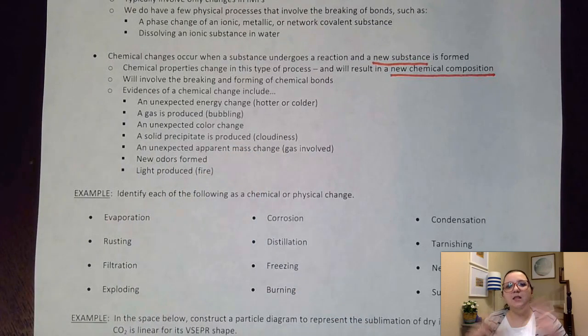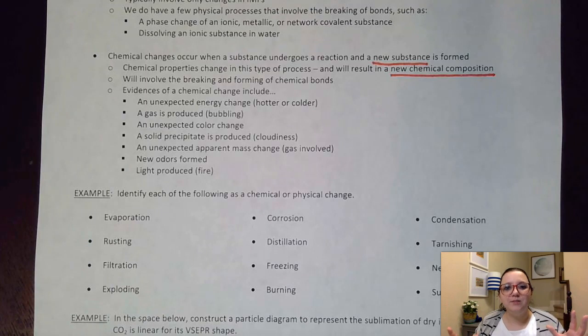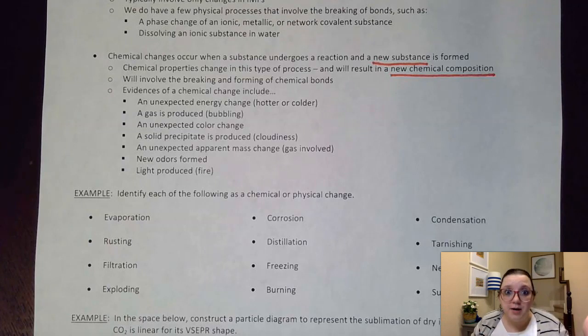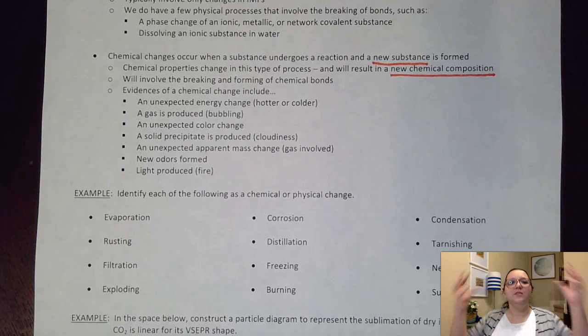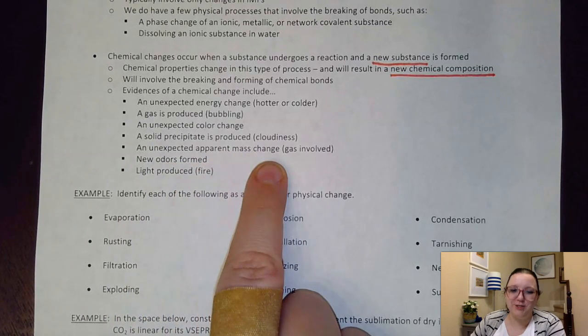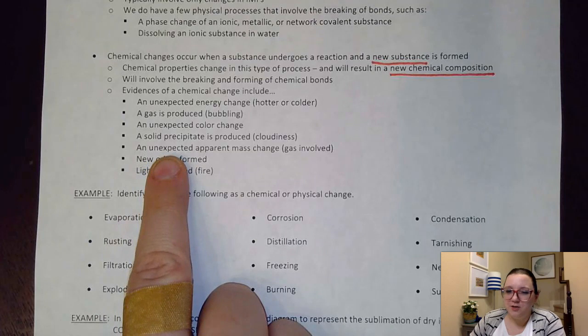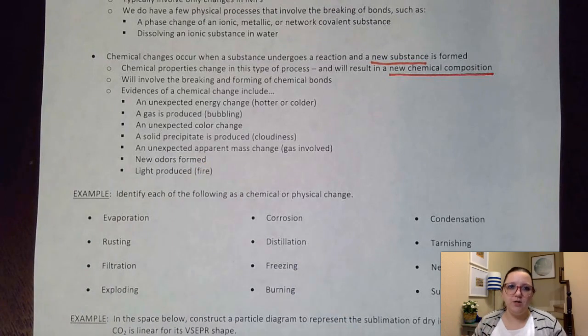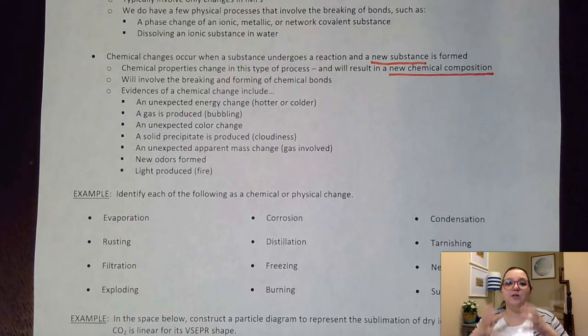A solid precipitate is being produced. Now, with precipitates, the initial kind of look to the substance is that you'll notice a cloudiness start to build up in your solution. And that cloudiness is that solid. If I let it sit long enough, eventually the solid would settle to the bottom and I could filter it out. But the first kind of appearance of that solid does make the solution overall turn cloudy. An unexpected apparent mass change. So unexpected because, again, I'm not just evaporating something where I expect to lose some mass. Apparent because hopefully we know that there's law of conservation of mass. So let me kind of talk about what this means. Let's say I had a reaction that was occurring on a balance. And for some reason, I didn't close that container. I left that container open. And I noticed what the mass was to begin with.